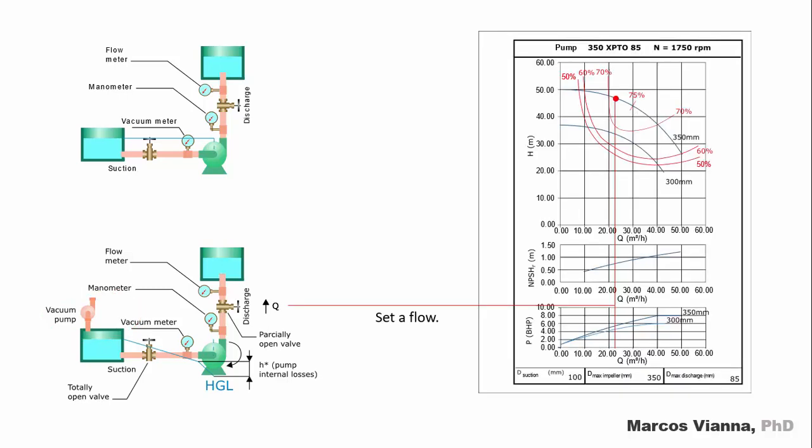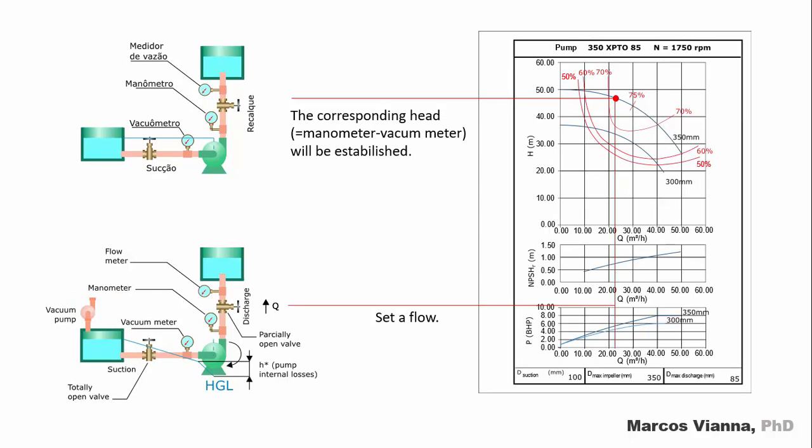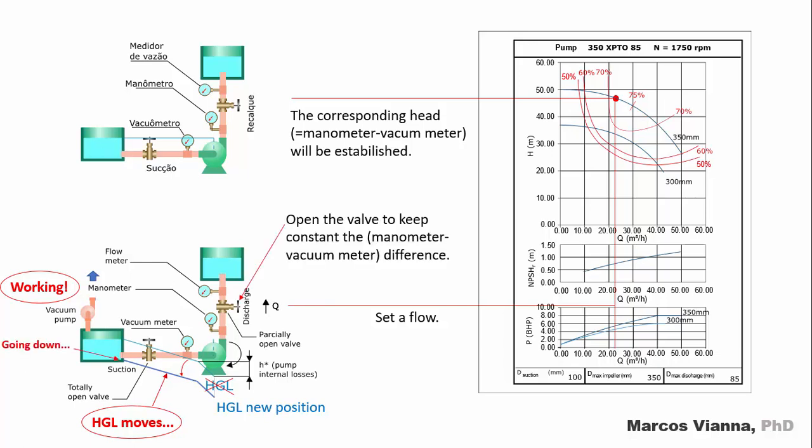We'll keep the flow constant. So, a corresponding head, equal to the difference between the manometer and the vacuum meter, will be established. Okay, now let's turn on the vacuum pump. Since there is a vacuum in the suction sump, the hydraulic grade line will move down, and again we must open a little the discharge valve to keep the manometer vacuum meter difference constant. Let's increase the vacuum in the suction sump. The hydraulic grade line will move down, and again we must open a little the discharge valve to keep the manometer vacuum meter difference constant.